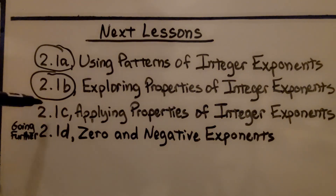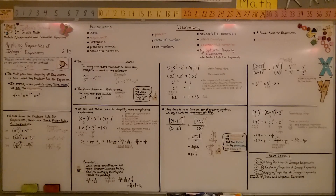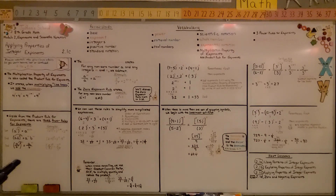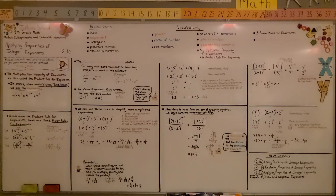We finished this lesson. We have one more lesson called zero and negative exponents at the end in the going further section. If you haven't already, you might want to take a screenshot of the product rule for exponents, the 3 power rules, and the quotient rule for exponents — it might help you for your notes. Please join me for the last part of the lesson, and I hope you have a wonderful day. Bye.